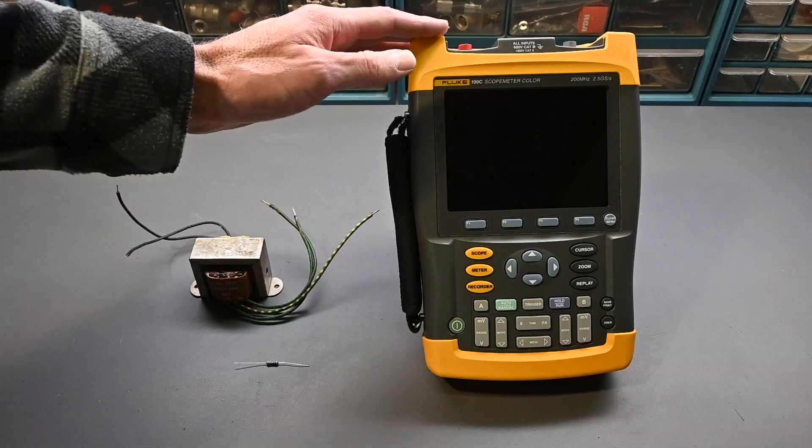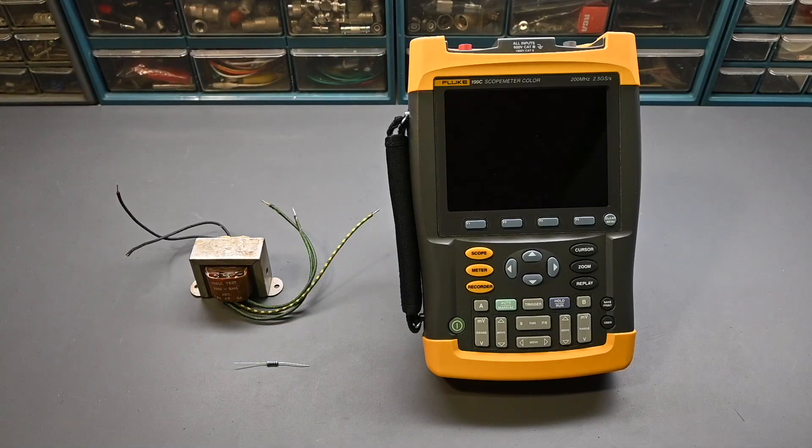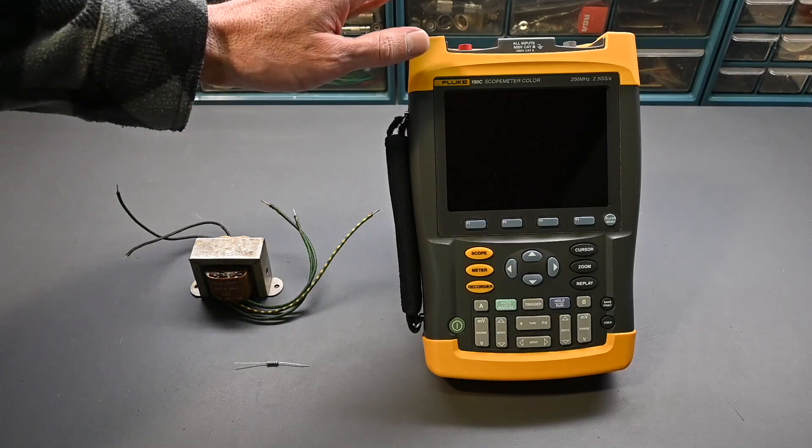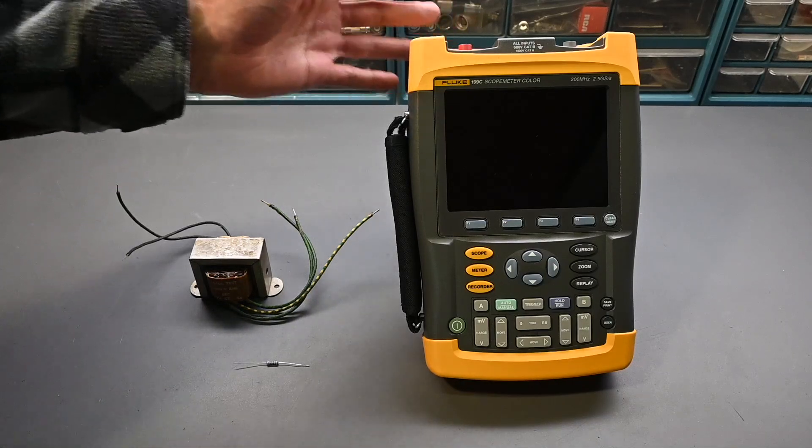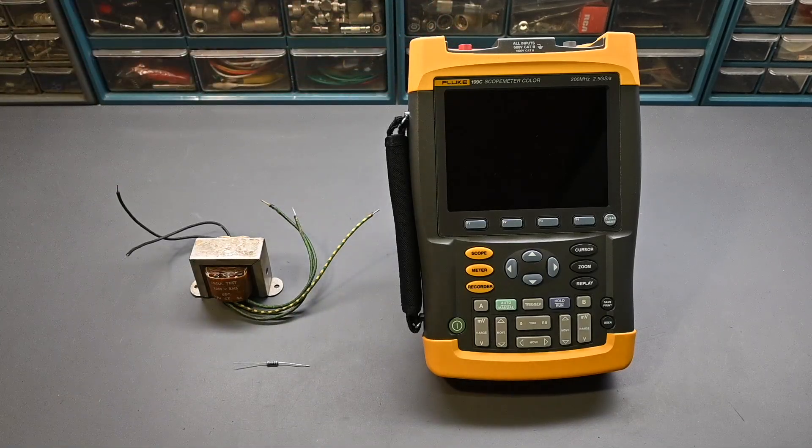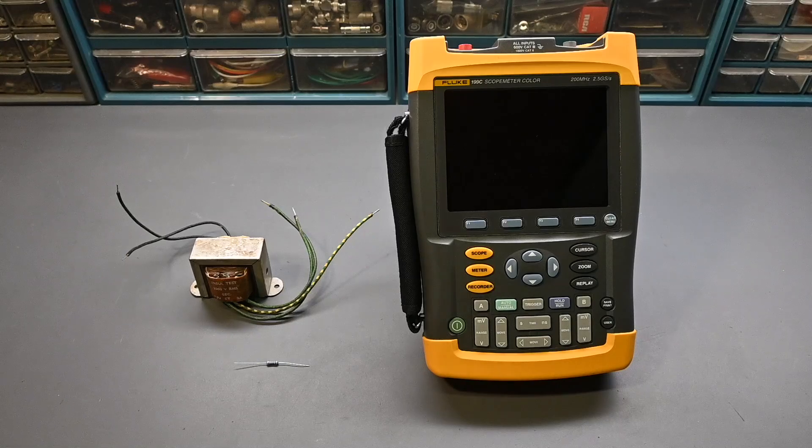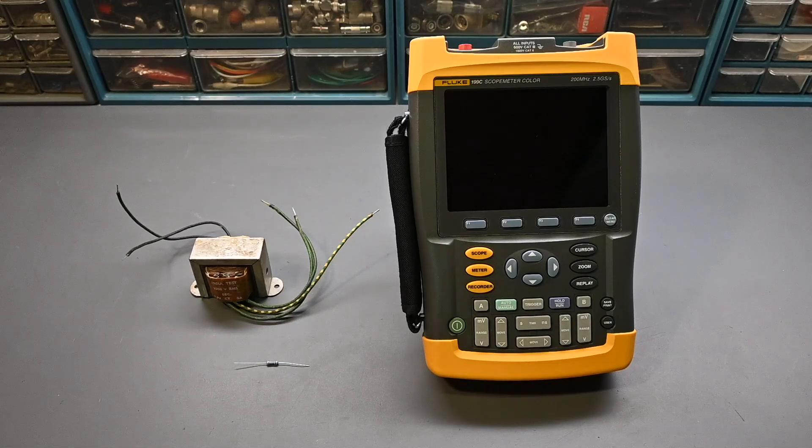It doesn't need to be a scope meter, it can be any traditional type of oscilloscope as well, analog or digital. A scope meter like this is isolated from ground, which can be useful in some applications, but it's not required. A traditional oscilloscope that has a ground reference is perfectly fine in most applications. Optionally, you may want to also use a Variac in the setup. Let's get started.